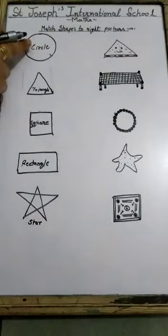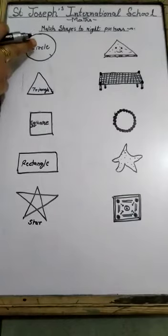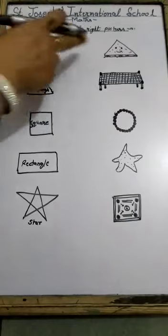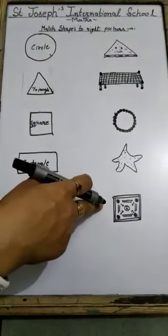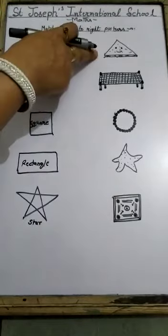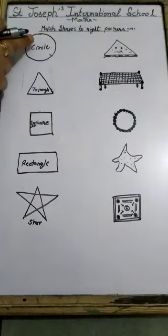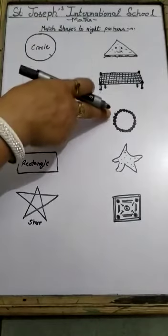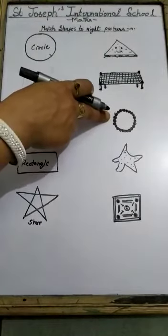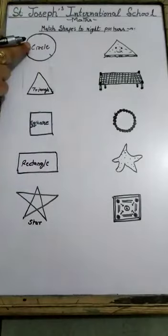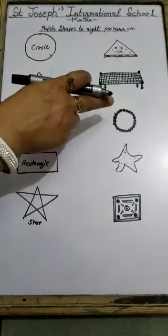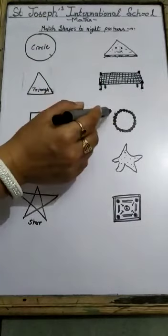First, which is this shape? Yes, this is a circle. This is circle shape. So children, now tell me, which figure has circle shape? See — sandwich. Sandwich has circle shape? No. Cot — cot has circle shape? No. This is bangle. Bangle similar to the shape? Yes, circle is round and round and bangle is also round and round. So match bangle to the circle shape.